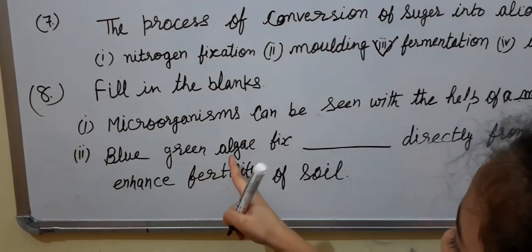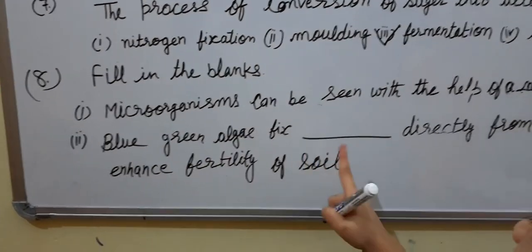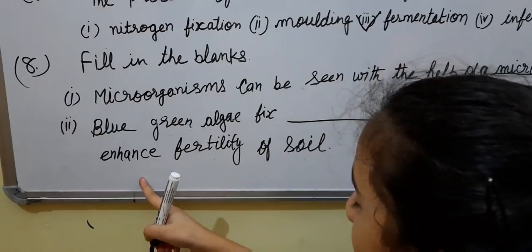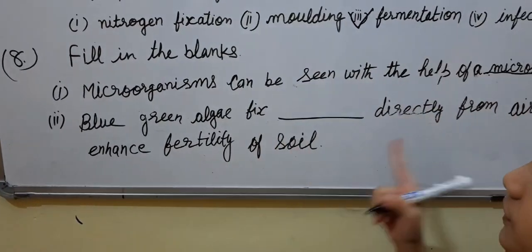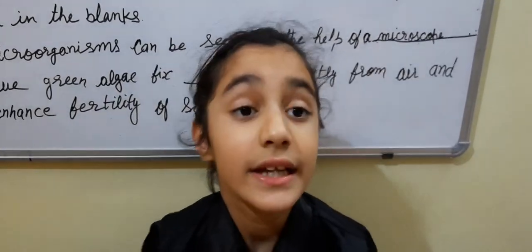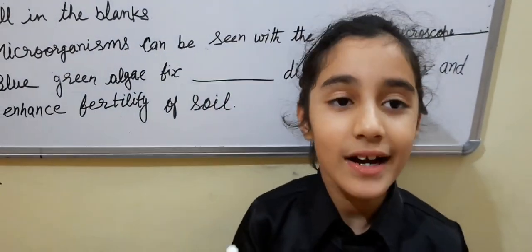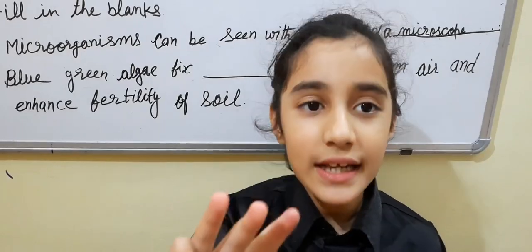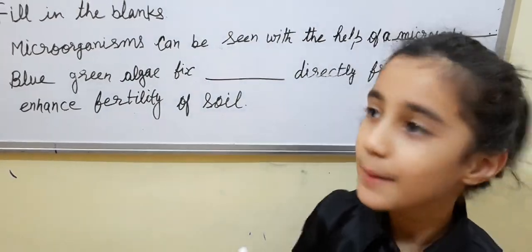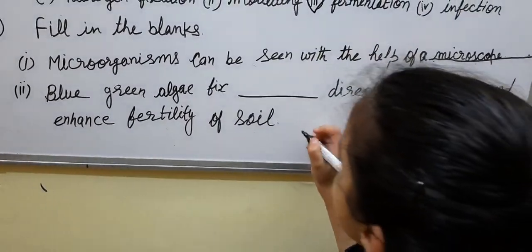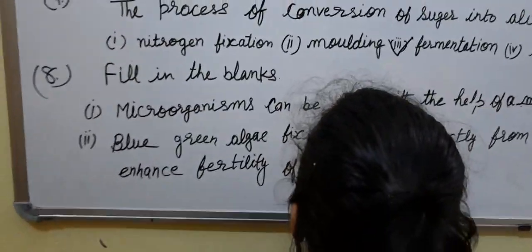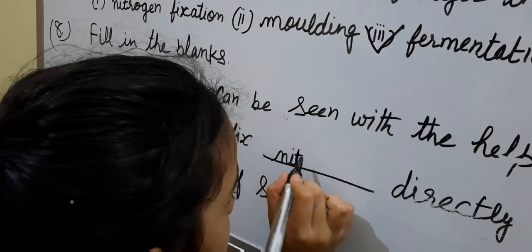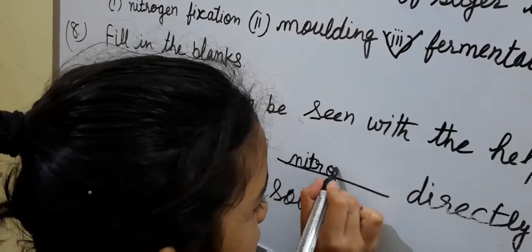Blue-green algae fix dash directly from air and enhance the fertility of soil. Your time starts now. The correct answer is nitrogen.